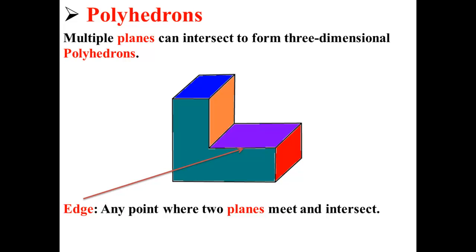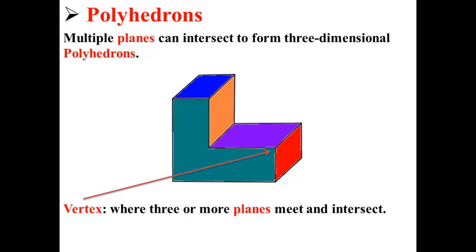Here we have an edge. An edge is where two planes meet and intersect. Here we have a vertex. A vertex is where three or more planes meet and intersect.